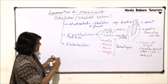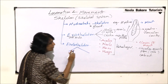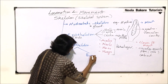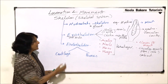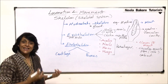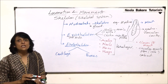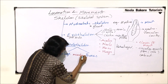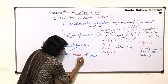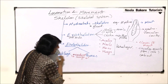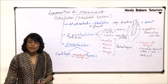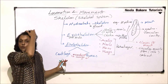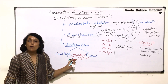Coming to endoskeleton — 'endo' means inside. There are two main categories: cartilage and bones. Both are present inside the body and are mesodermal in origin. There are three germ layers: endoderm, ectoderm, and mesoderm. Both cartilage and bone tissues arise from the mesoderm, which is why we call them mesodermal.